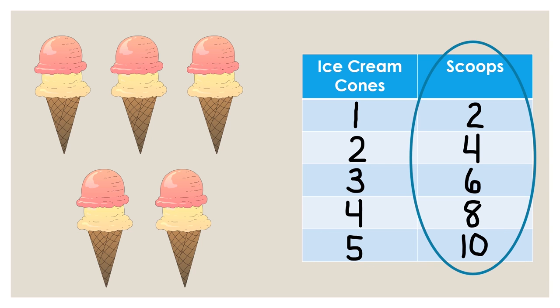Did you know that when we say the numbers in the scoops column, we are skip-counting by twos, two, four, six, eight, ten?